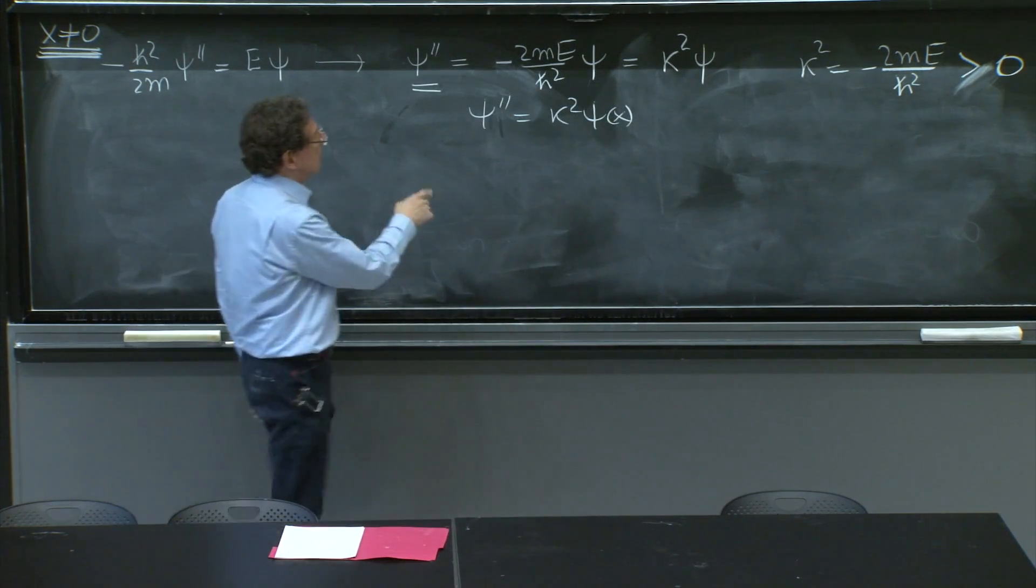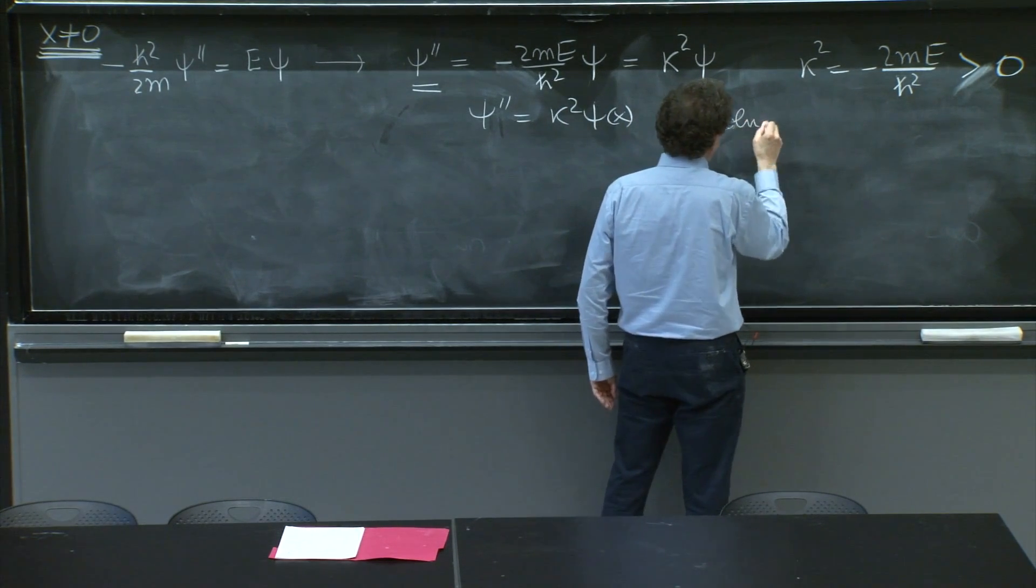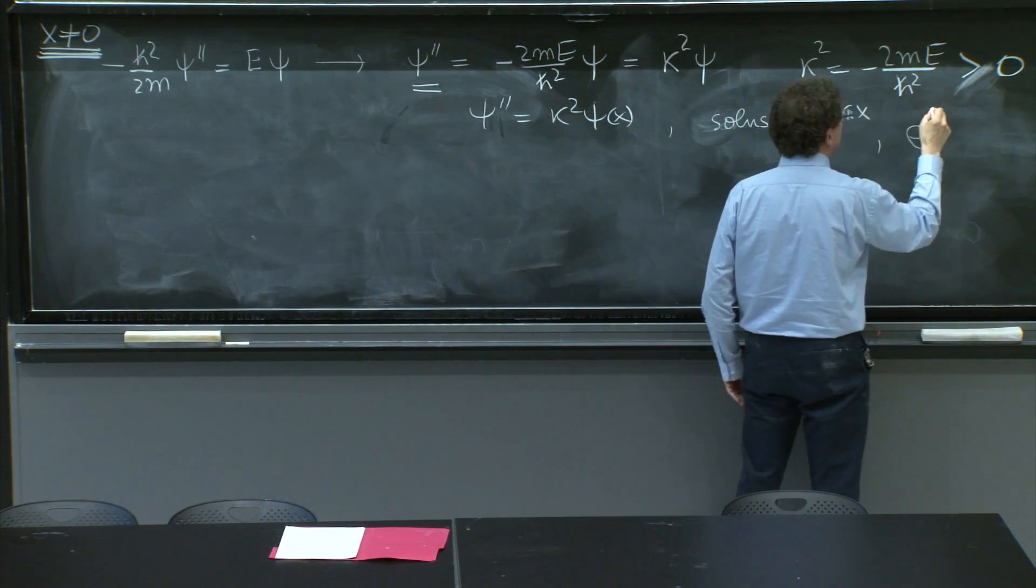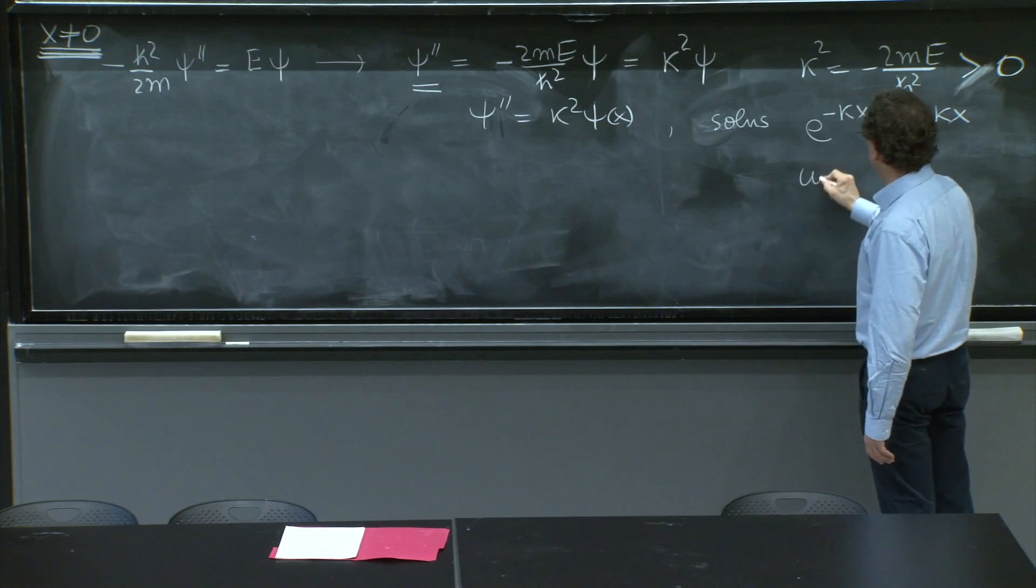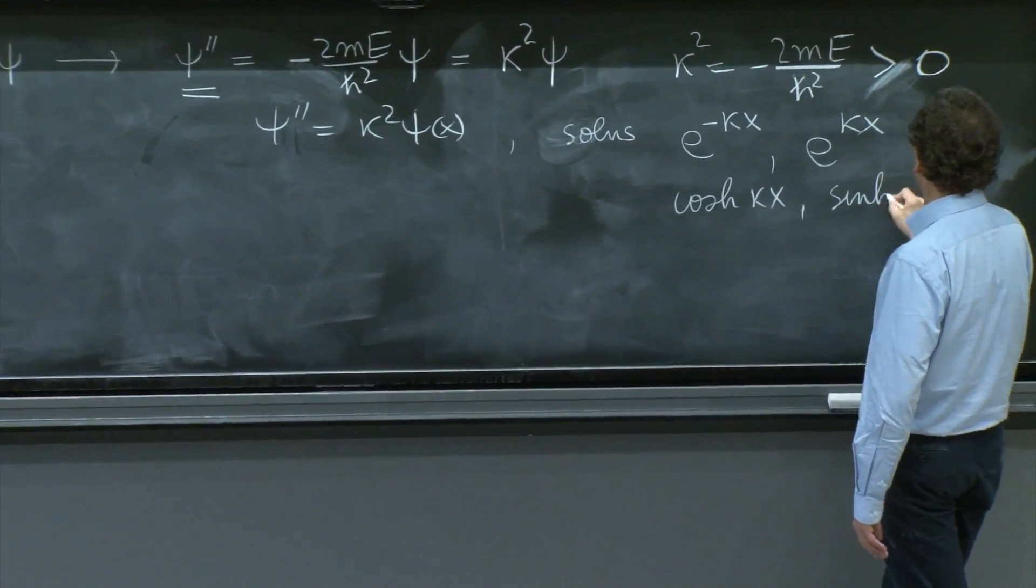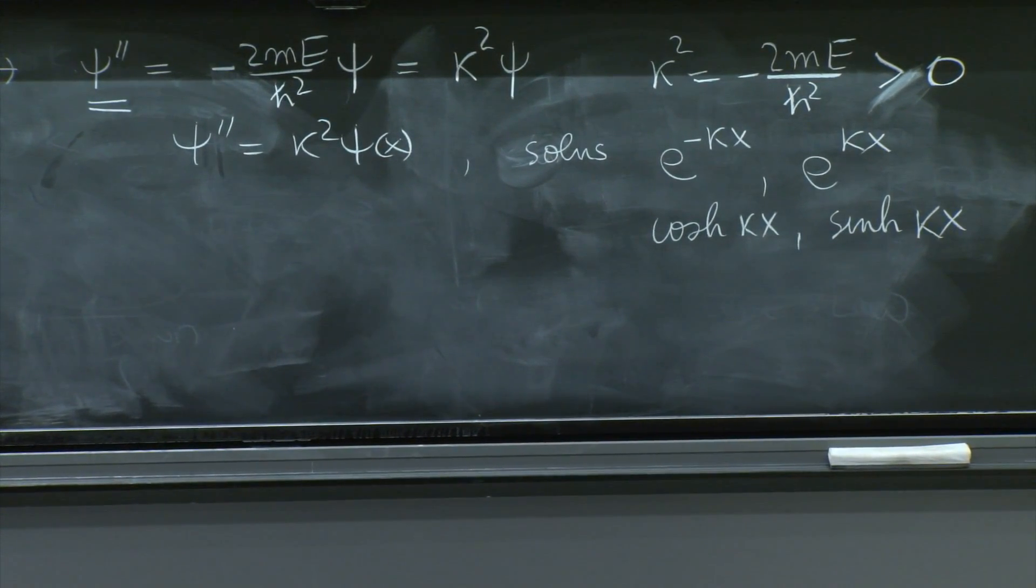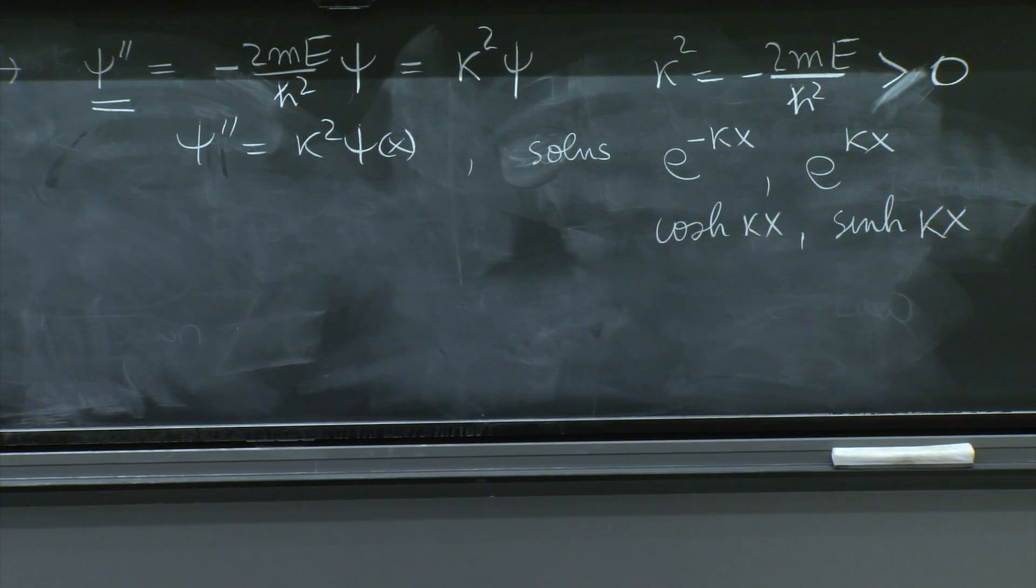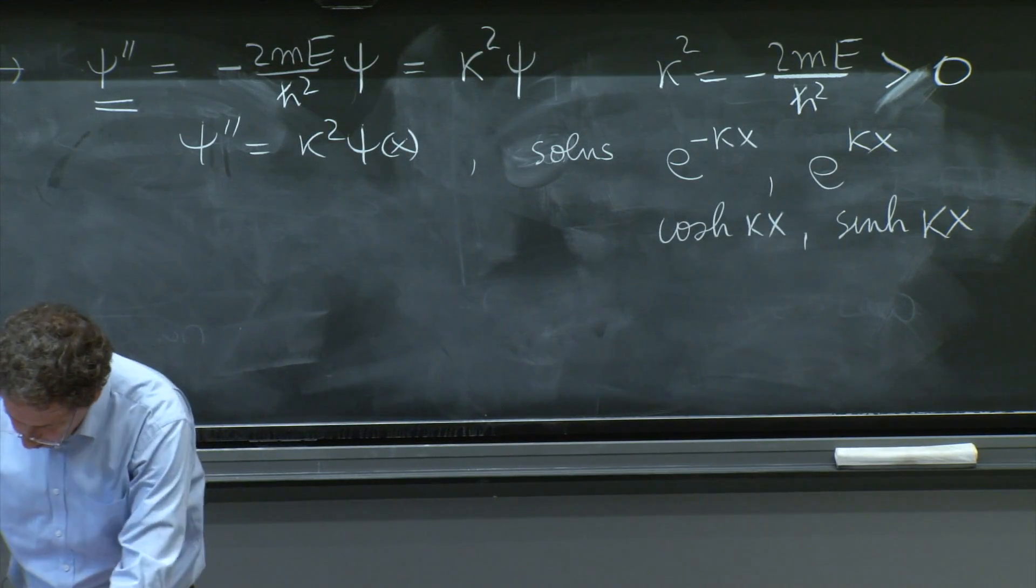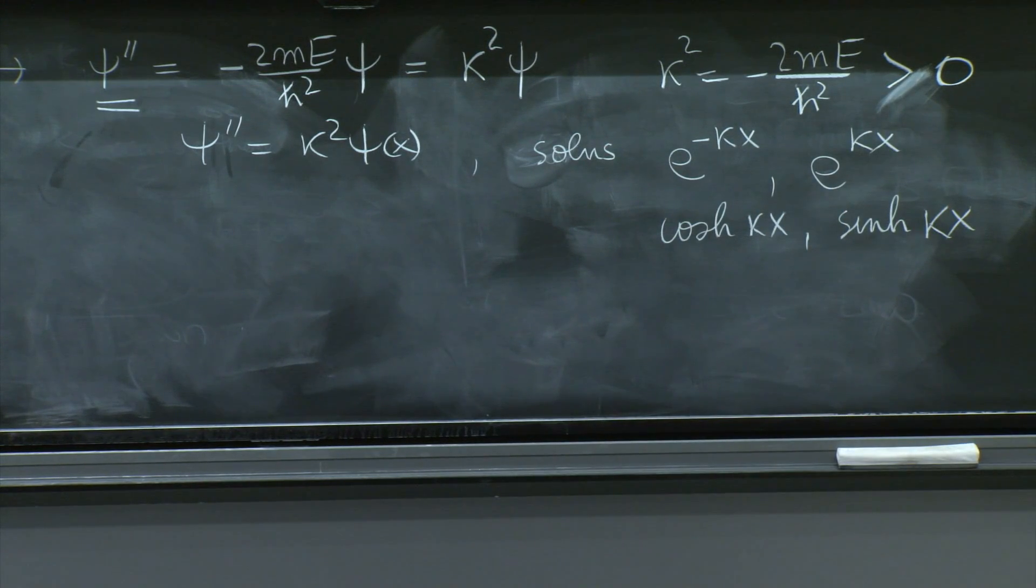So we're looking for bound states only. κ² is positive. And the solutions of this equation are e^(-κx) and e^(κx). Or if you wish, cosh(κx) and sinh(κx), whichever you prefer. But this is something we now have to use in order to produce a solution.